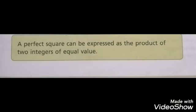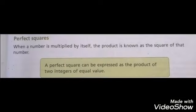Definition: A perfect square can be expressed as the product of two integers of equal values.